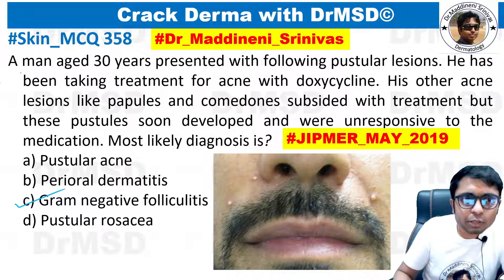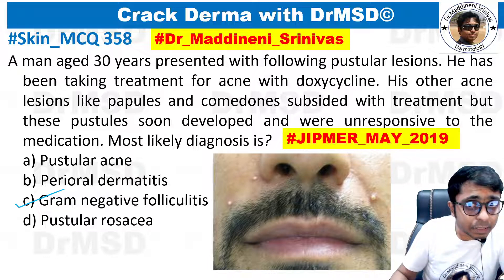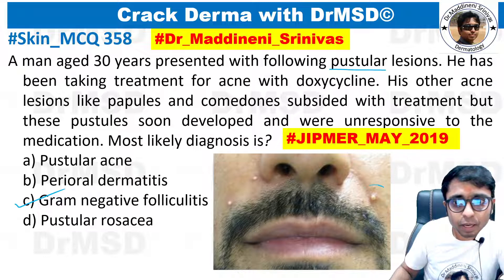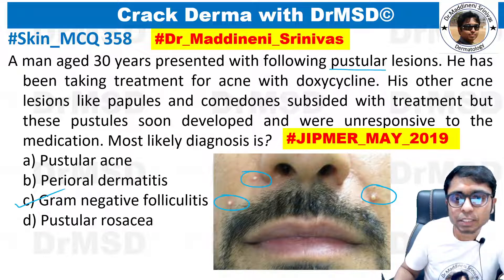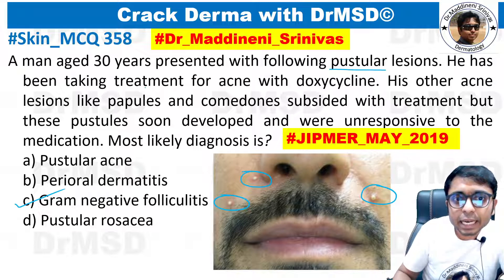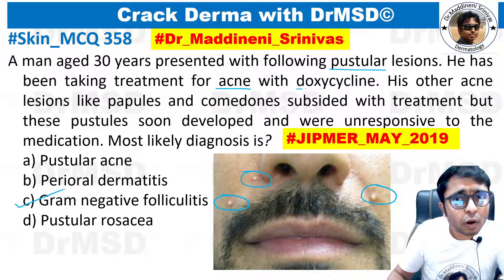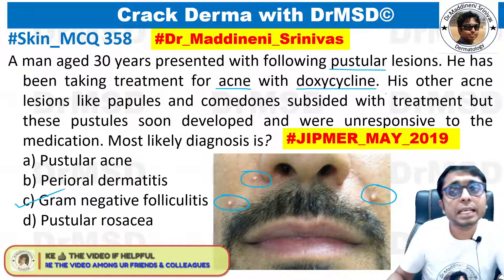So first, let us read the question carefully. A man aged 30 years presented with the following pustular lesion. There are some pustular lesions as you can see here — periorally and also perinasally. He has been taking treatment for acne; it is mentioned that he had acne for which doxycycline, a tetracycline group of medication, was started.